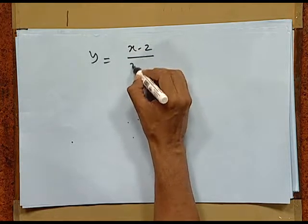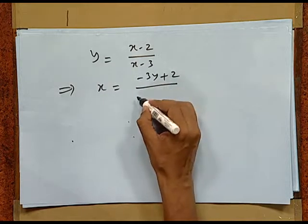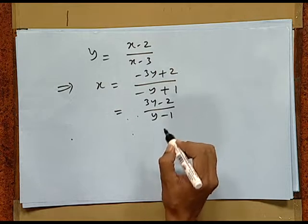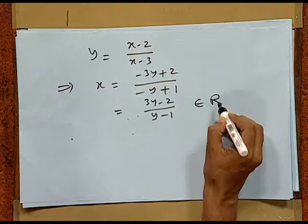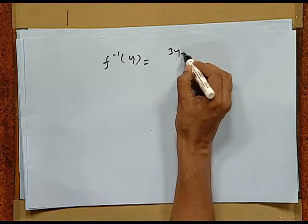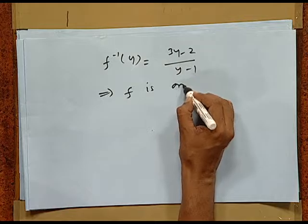First, we take the onto part. Let y = (x - 2)/(x - 3). This makes x = (-3y + 2)/(-y + 1), that is, x = (3y - 2)/(y - 1). Since y belongs to B and the number 1 is not in B, y - 1 in the denominator makes sense because y - 1 cannot be zero. So clearly this belongs to R, and we can write f-inverse(y) = (3y - 2)/(y - 1). Thus, f-inverse exists for every y belonging to B. Hence, the function is onto.